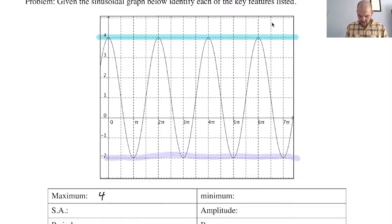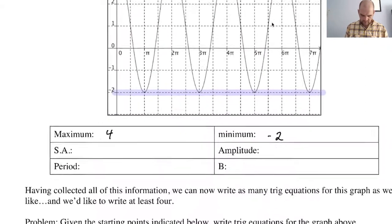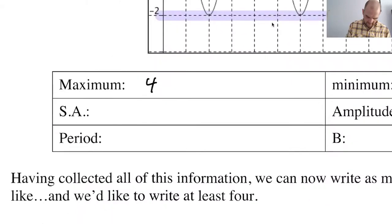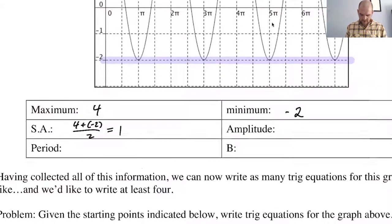we sort of implicitly automatically know the sinusoidal axis because it's got to be halfway in between them. So add them together, divide by two, four plus negative two. Maybe I'll actually show that. Four plus negative two divided by two is going to be one. So the sinusoidal axis is going to be at y equals one.